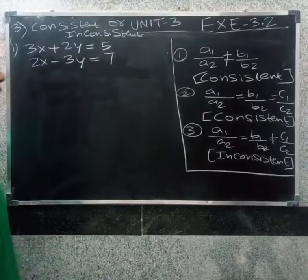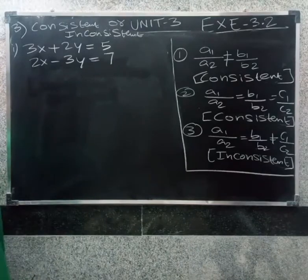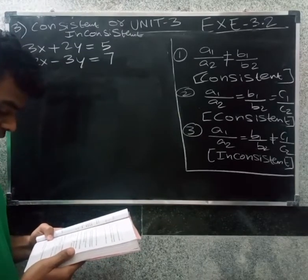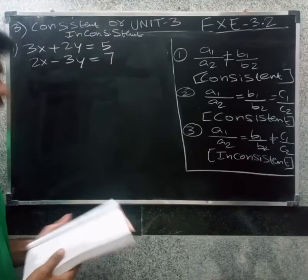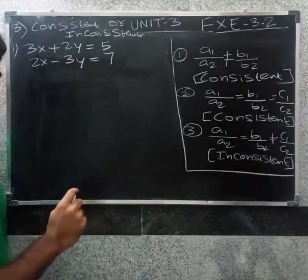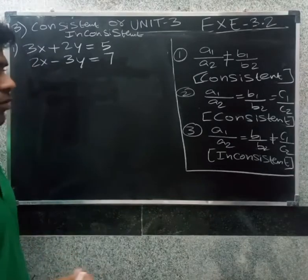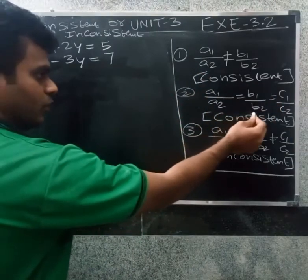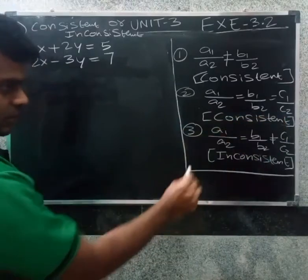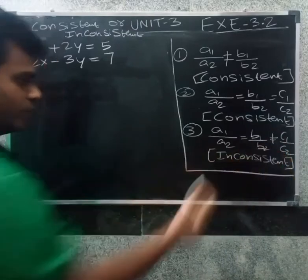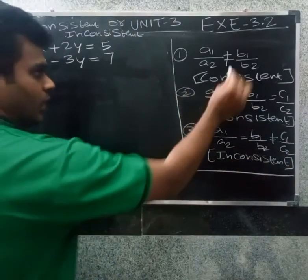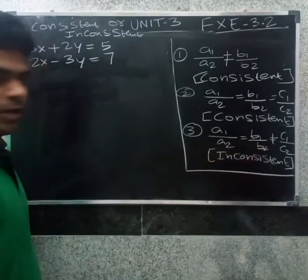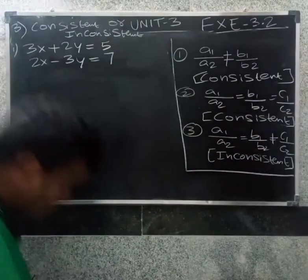Welcome friends. Unit 3, section 3.2 is the third question. Comparing ratios a1 by a2, b1 by b2, and c1 by c2 to find out whether the following pairs of linear equations are consistent or inconsistent. If a1 by a2 is not equal to b1 by b2, it is consistent. If a1 by a2 equals b1 by b2 equals c1 by c2, it is consistent. If a1 by a2 equals b1 by b2 but not equal to c1 by c2, it is inconsistent.